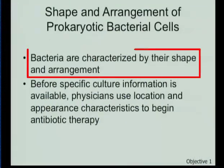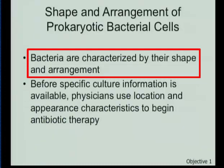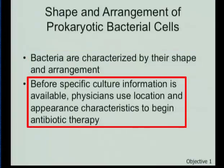We characterize bacteria based on their shape and arrangement. We distinguish bacilli, cocci, spirochetes, spirilla, and mycoplasms, among others. We can delineate these by looking under a light microscope — examining their shape and whether they appear in pairs, in chains, or in clusters. All of that information helps us narrow down what organism we're dealing with and therefore how to best treat the patient.